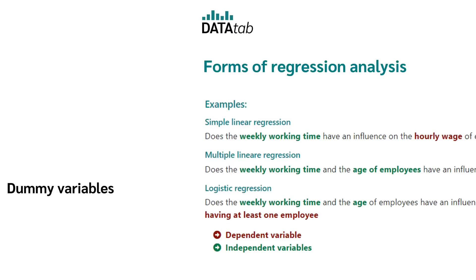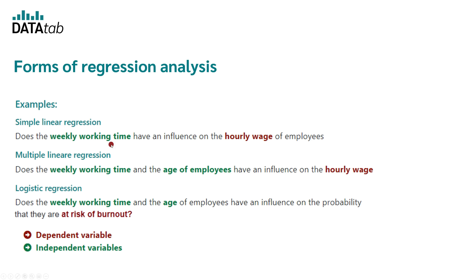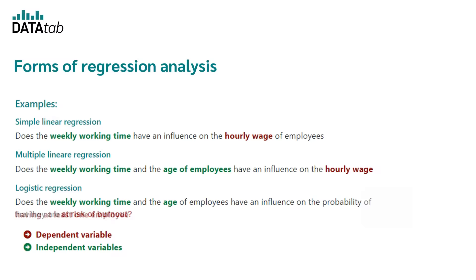A quick recap: for simple linear regression, a question could be, does the weekly working time have an impact on the hourly wage of people? There is only one independent variable in this case. For multiple linear regression, an example question could be, do the weekly working hours and the age of employees have an influence on the probability that they are at risk of burnout? In that case, burnout risk has the expressions yes or no.